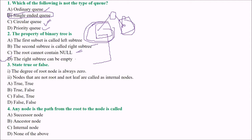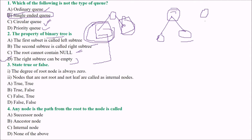Option: the right subtree cannot be empty. In a binary tree, can the right subtree be empty? In a strict binary tree, each node must have either zero or two children. We select this answer by rejection — we are not saying it is absolutely correct, but we select by rejection. So the answer is D.